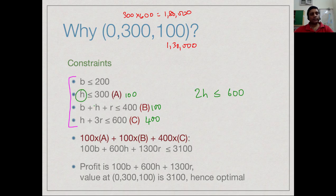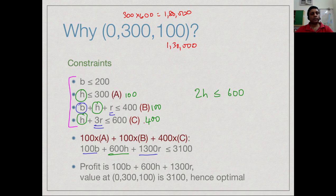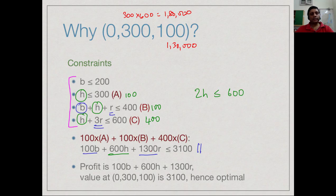Combining a, b and c with this combination - that I multiply a by 100, b by 100, c by 400 - I produce a new inequality. But this new inequality tells us something interesting, because in fact, what we have on the left-hand side is our profit. The profit is exactly 100b plus 600h plus 1300r - we are trying to maximize this. And what our constraints tell us is that in the feasible region, this value can be no more than 3,10,000.